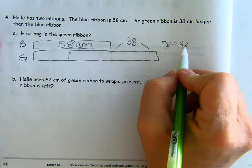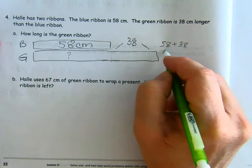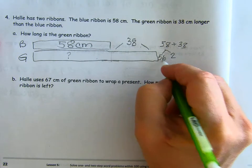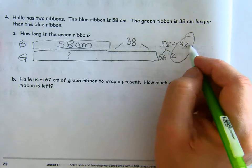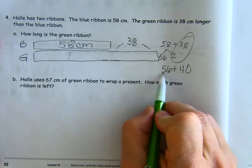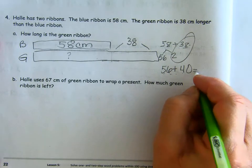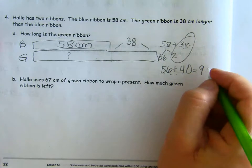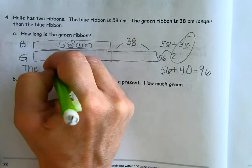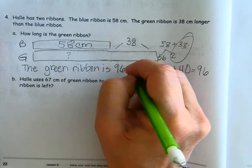So 58 plus 38 is going to equal the green ribbon. Now we could change either of these to the next multiple. Let's change 38. We need 2 more to get that, so 8 minus 2 is 56, and we'll add those 2 together. 38 plus 2 is 40. So we have 56 plus 40. 5 tens and 6 plus 4 tens. 5 tens and 4 tens is 9 tens, 6 plus 0 is 6. How long is the green ribbon? The green ribbon is 96 centimeters.